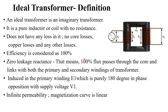Winding losses will be absent in an ideal transformer. Winding losses means I-squared-R losses or copper losses that are commonly found in these windings. So winding losses are absent in ideal transformer and its efficiency is normally considered as 100%. That means 100% of the flux will completely pass through the primary winding, through the core, and completely flow through the secondary windings. That means it has no leakage reactance.